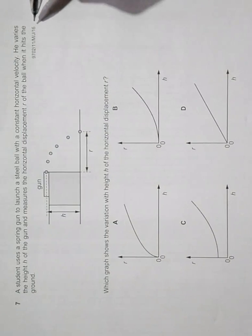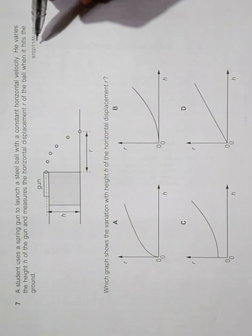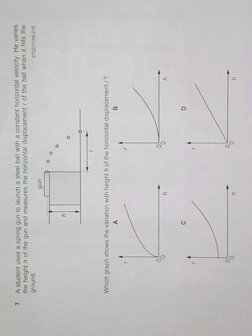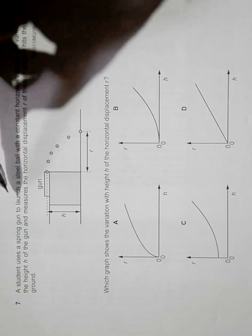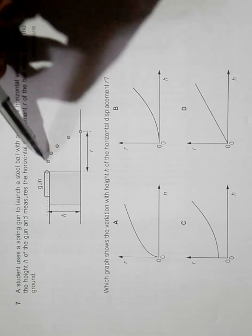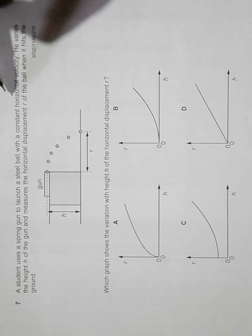This is the question of 2016 May June paper 1-1, question number 7. It says that a student uses a spring gun to launch a steel ball with a constant horizontal velocity.